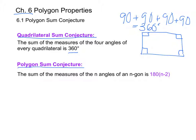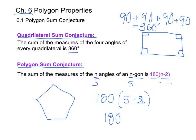Then we have the polygon sum conjecture which says that the sum of the measures of the n angles of an n-gon, however many sides it has, is 180 times n minus 2. For example, if we wanted to figure out the sum of the angles in a pentagon, that's going to be 180 times 5 minus 2, which is 180 times 3, which equals 540 degrees.